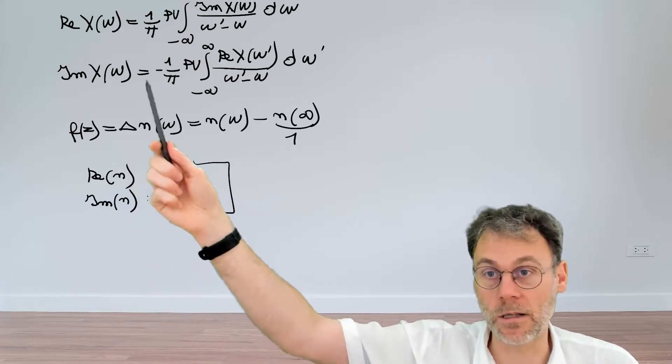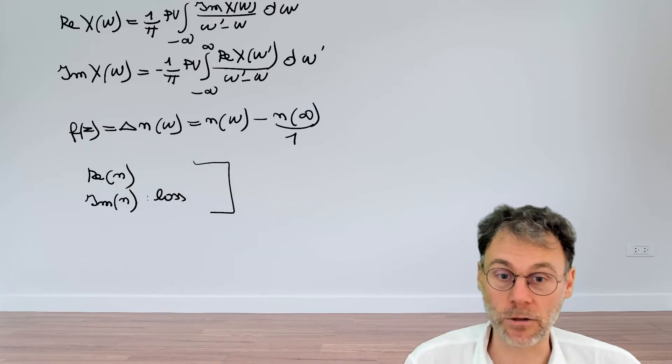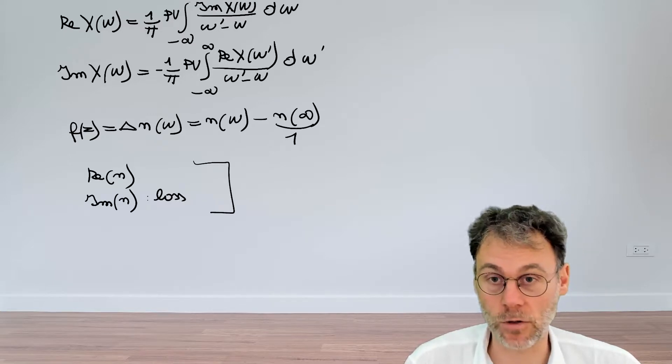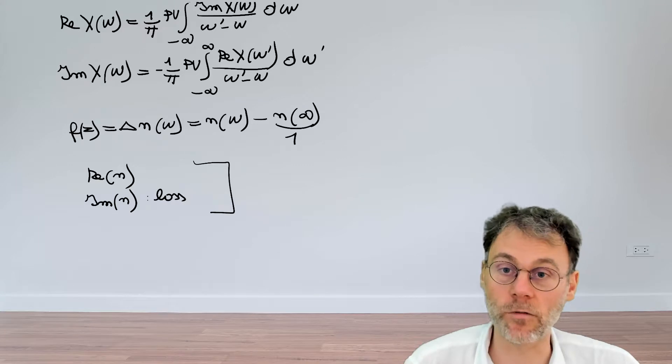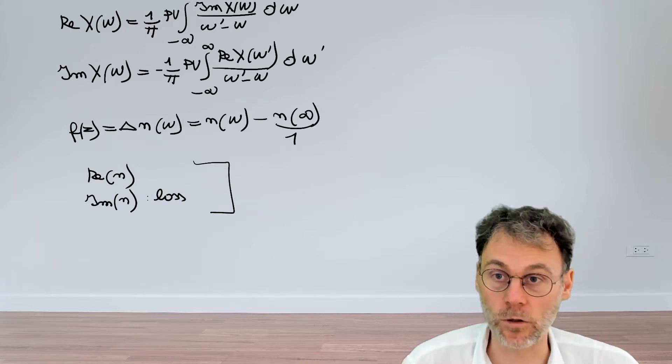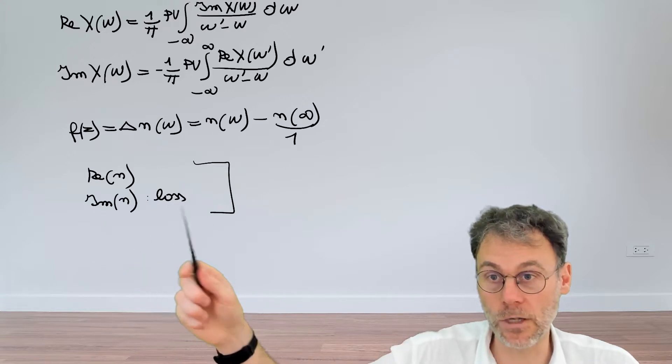And what Kramers-Kronig tells us is that these two are related. So if you know one as a function of frequency you automatically can calculate the other one. So that gives us a handy experimental trick if you want to, for example, figure out the real part of the refractive index of a certain material.